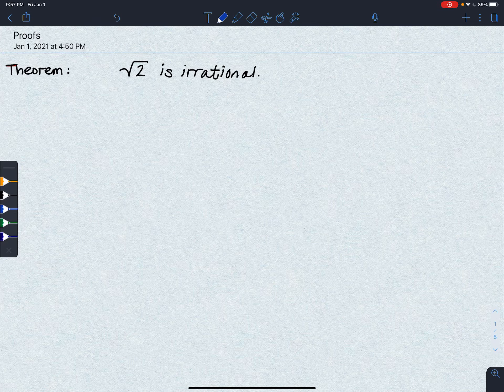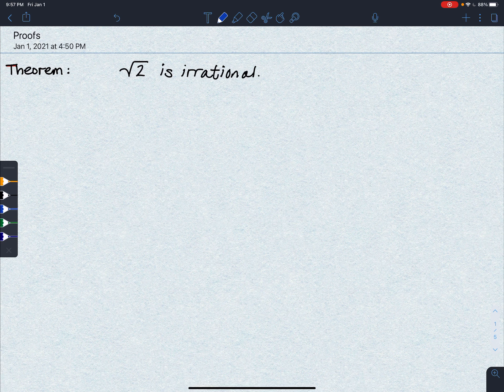So in this video, we're going to prove that the square root of 2 is an irrational number. Now you might try to remember, what is an irrational number? It's any number that cannot be expressed as a fraction of two integers.